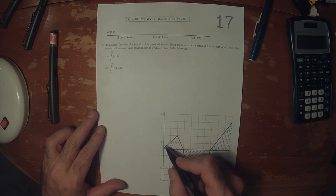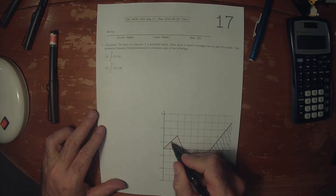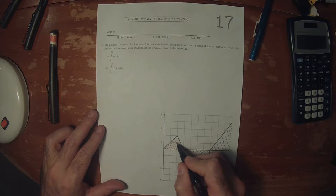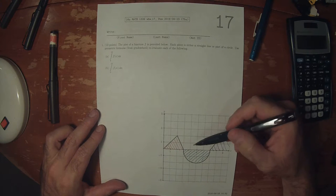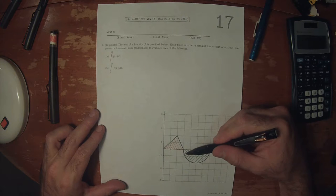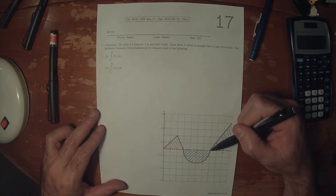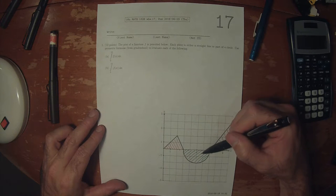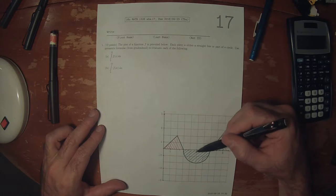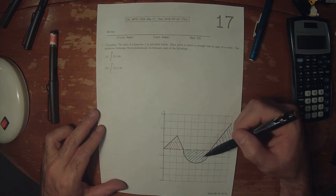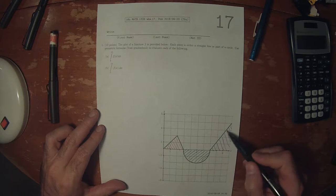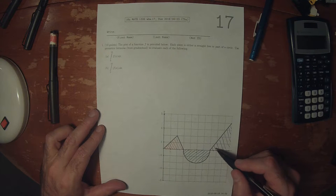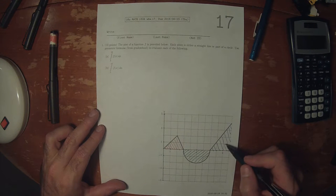Because f is positive in this region, the integral reckons this area as positive. And because f is negative in this region, the integral reckons this green area, this semicircular area, as negative. And because f is positive in this region, the integral reckons this area as positive.